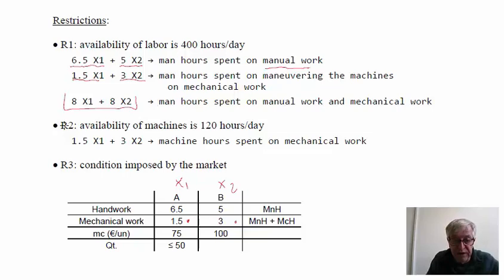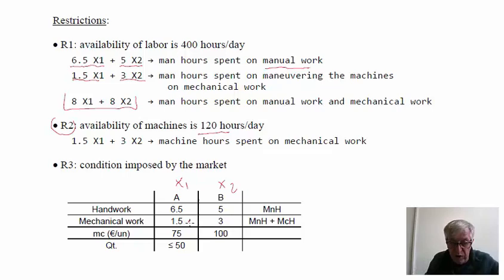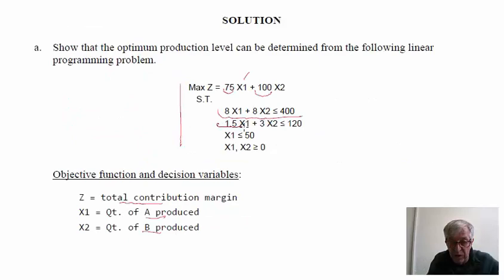For the second resource — machine hours — we have 120 available. To perform mechanical work, the machines use 1.5 hours for A (i.e., 1.5·x1) and 3 hours for B (i.e., 3·x2), giving the constraint 1.5x1 + 3x2 ≤ 120. The last restriction is the market condition: x1 ≤ 50.